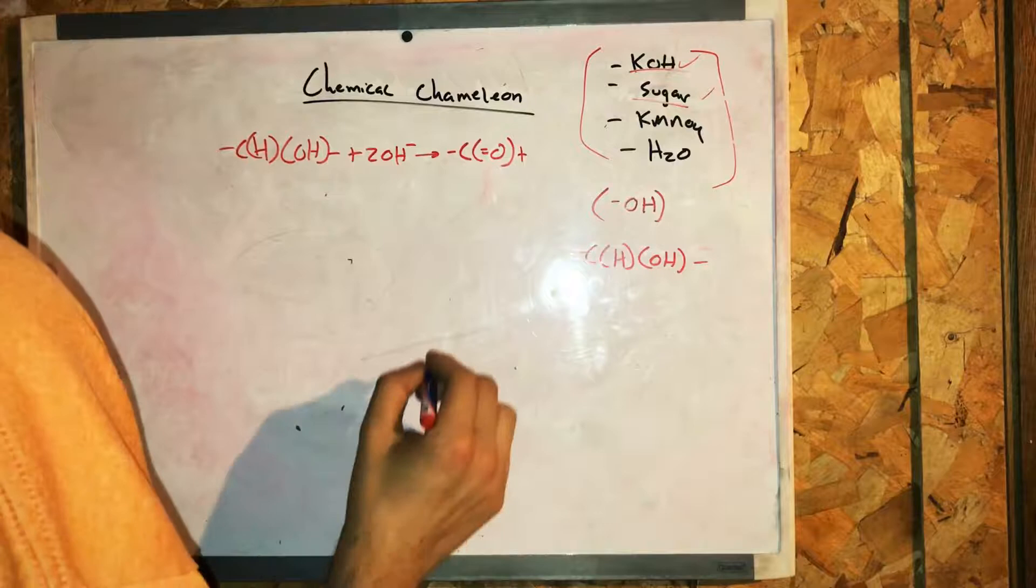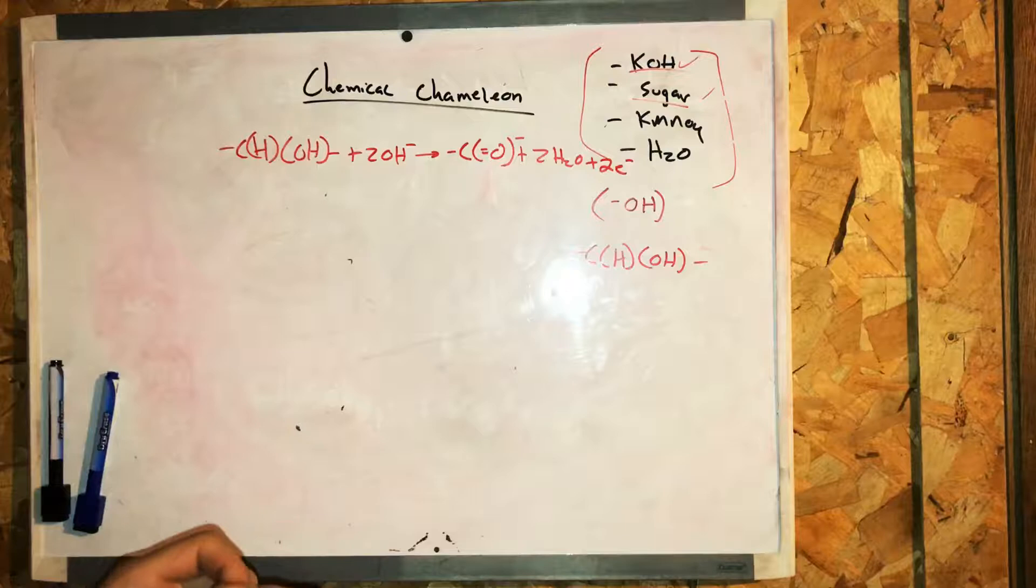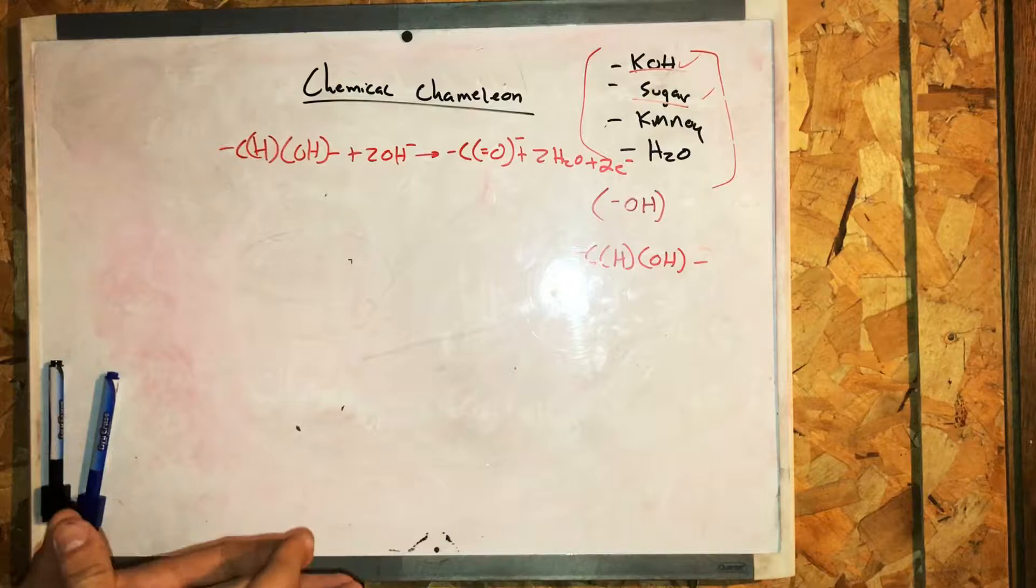For the permanganate ion, it is first reduced to the manganate ion: MnO4- plus one electron yields MnO42-.